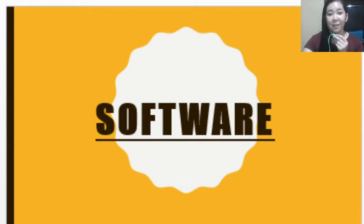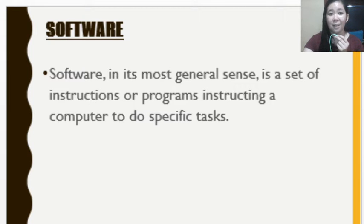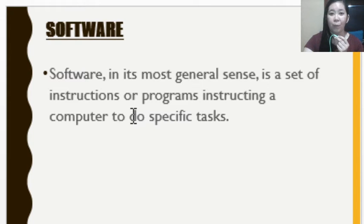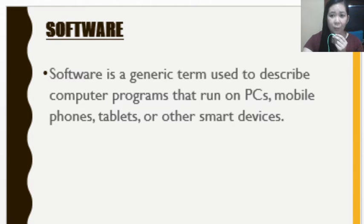We go now to software, the third topic under Module 15: Basic Concepts for a Computer. In the most general sense, software is a set of instructions or programs instructing a computer to do specific tasks. As mentioned in our previous video lecture, software is the intangible part of the computer system. Software is a generic term used to describe computer programs.